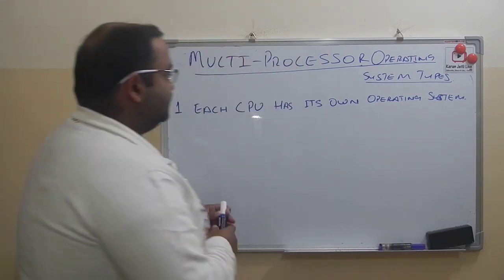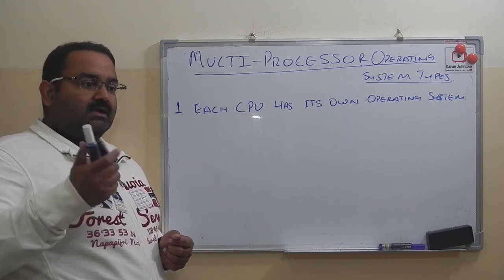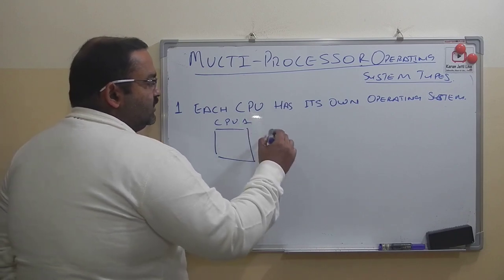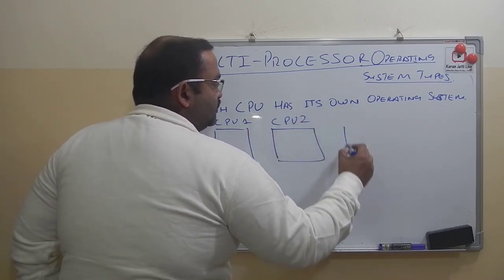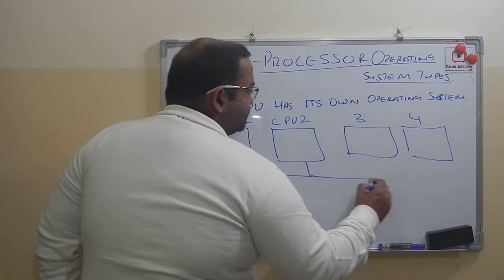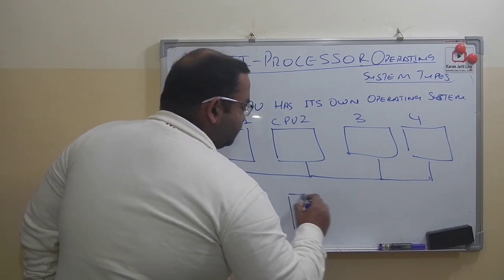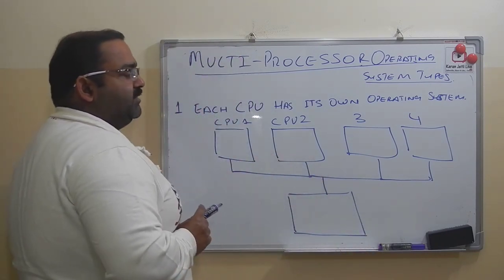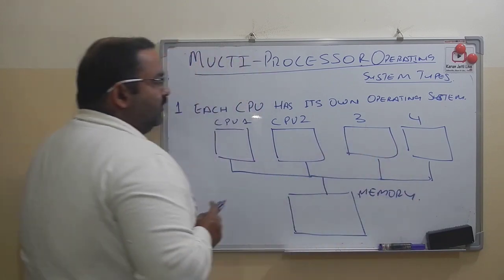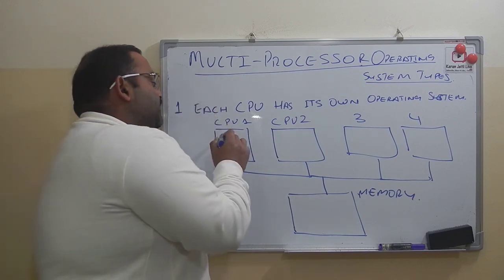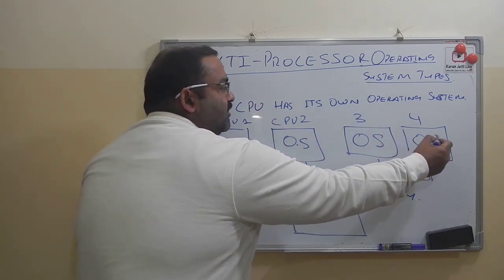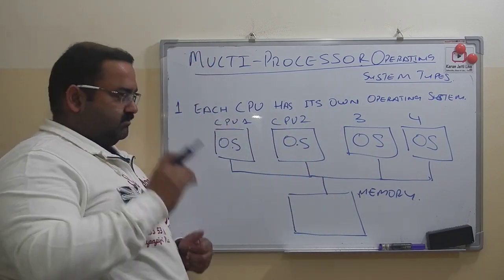This is the first type in which each CPU has its own operating system. We have different CPUs — CPU 1, CPU 2, CPU 3, and CPU 4 — all connected to each other using a bus. They are also sharing memory with the help of the bus. Each CPU has its own private operating system.